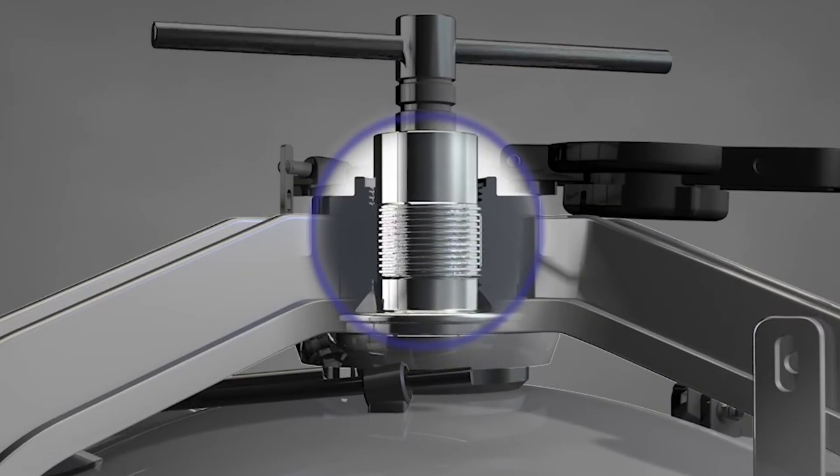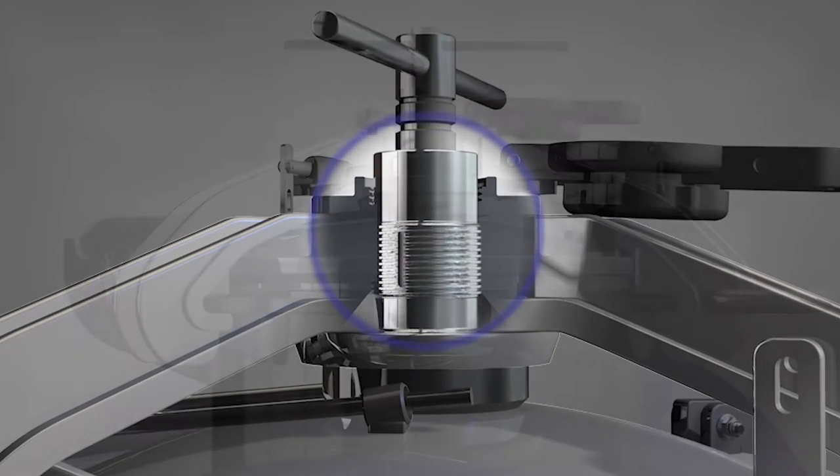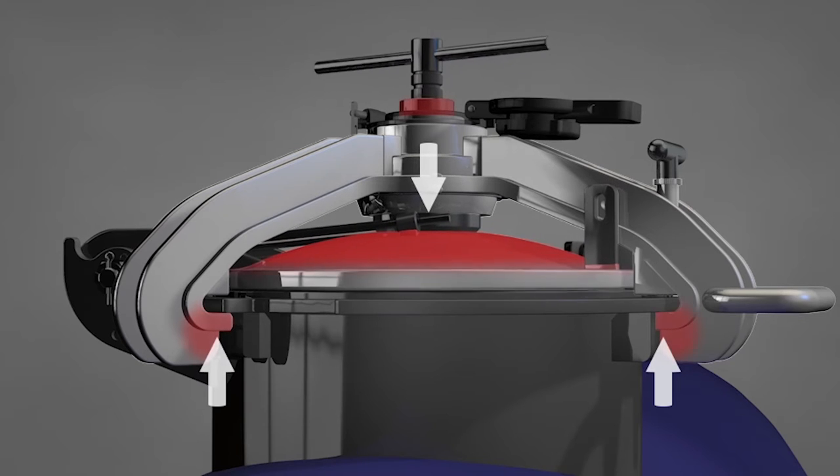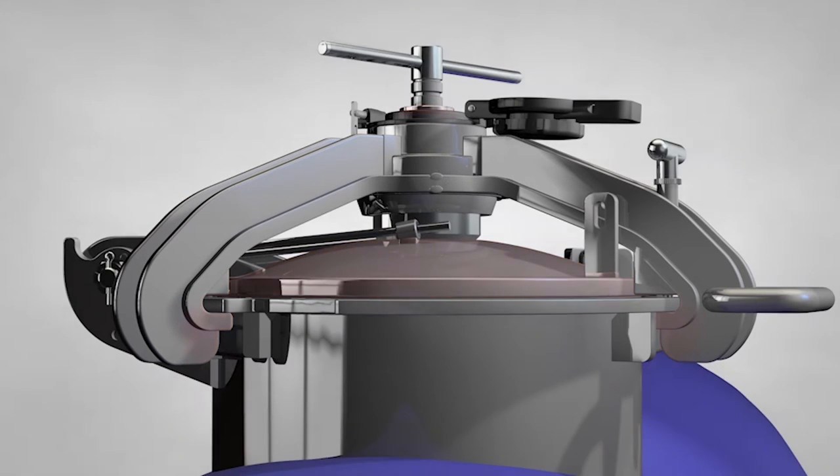Approximately 5.5 turns will move the cover into a fully closed position, engaging the O-ring with the internal surface of the nozzle and creating even clamping pressure across the hatched surface.